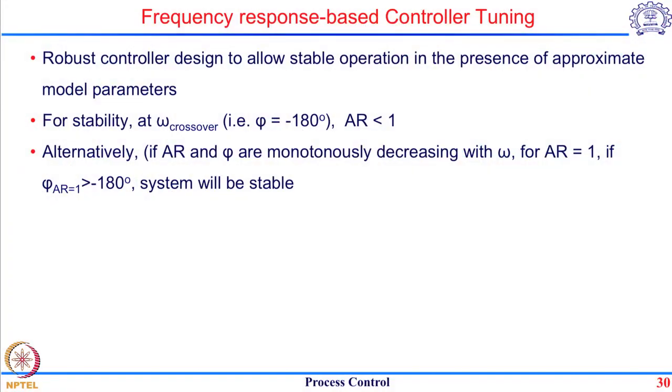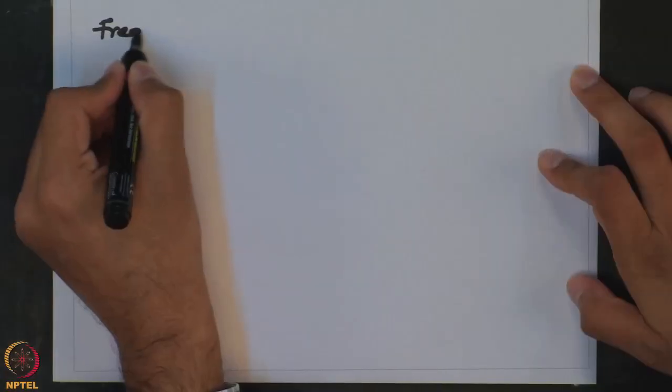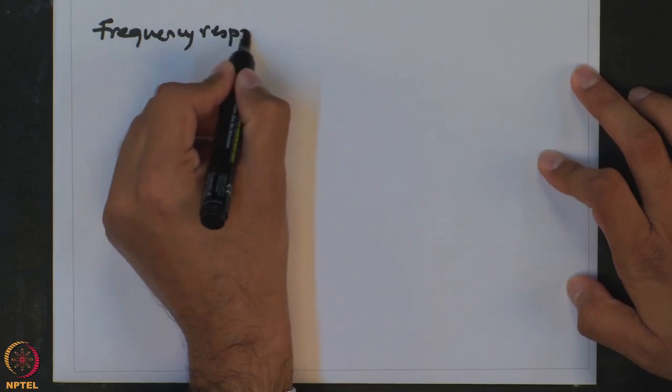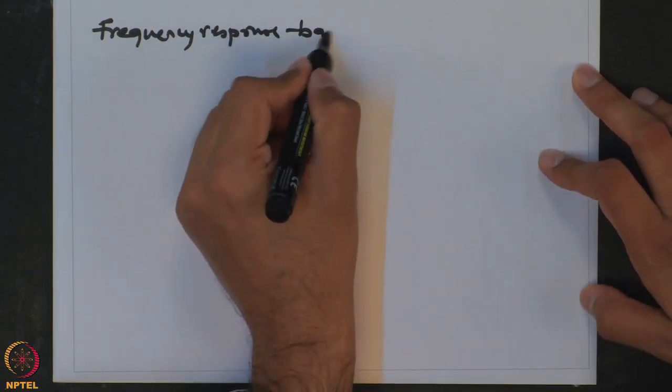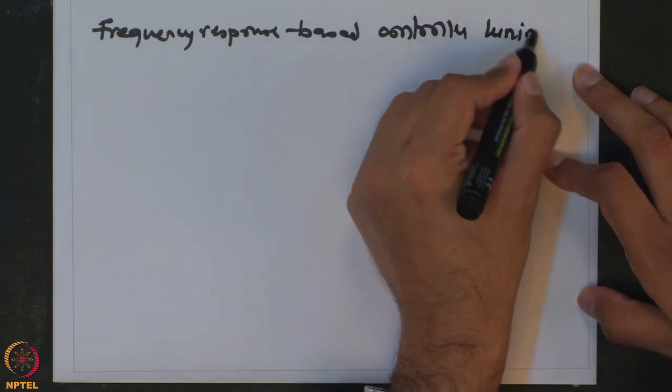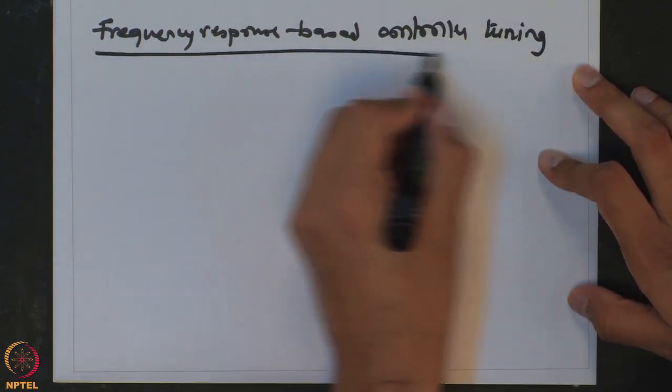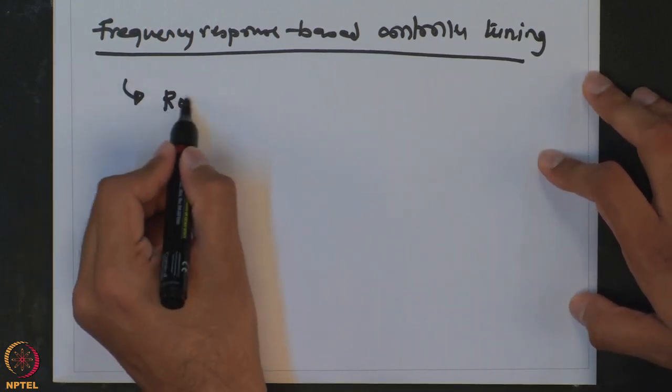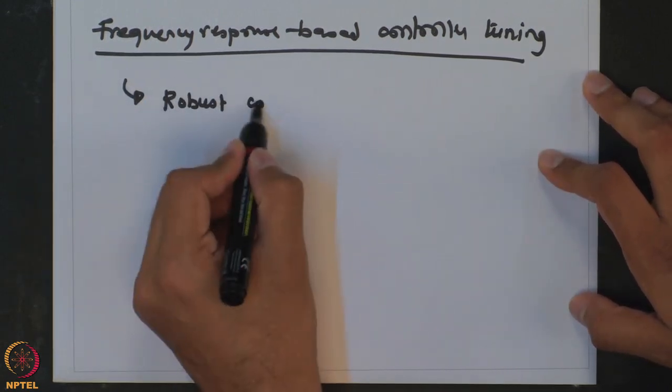Welcome back. We will now look at the final method of controller tuning, and this time we will be talking about a method which falls in the domain of robust control. This will be a method based on frequency response — frequency response based controller tuning under the domain of robust control design.